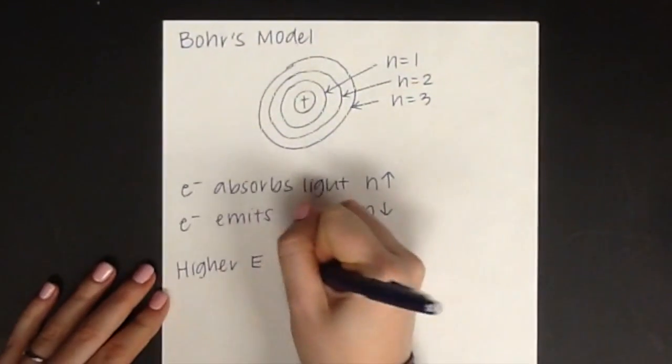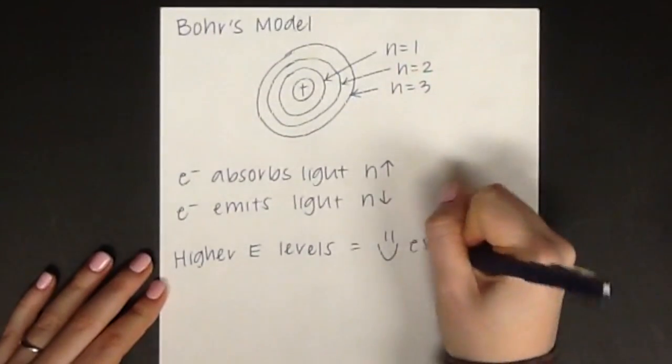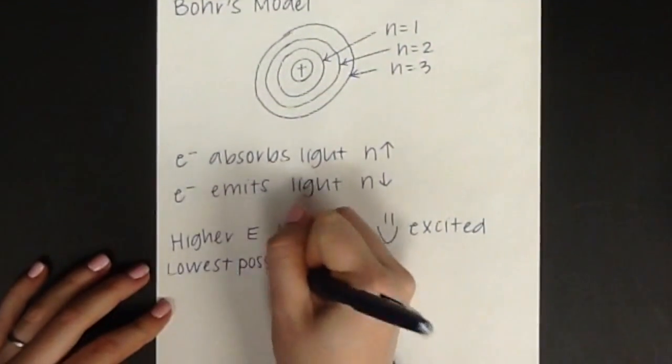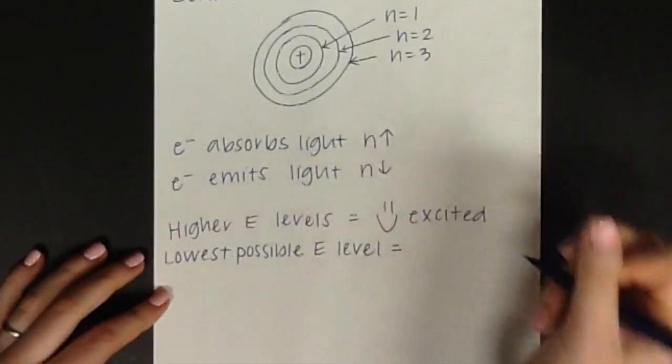When energy level increases, this means that the atom is in an excited state. When the electron is in the lowest possible energy level, the atom is in its ground state.